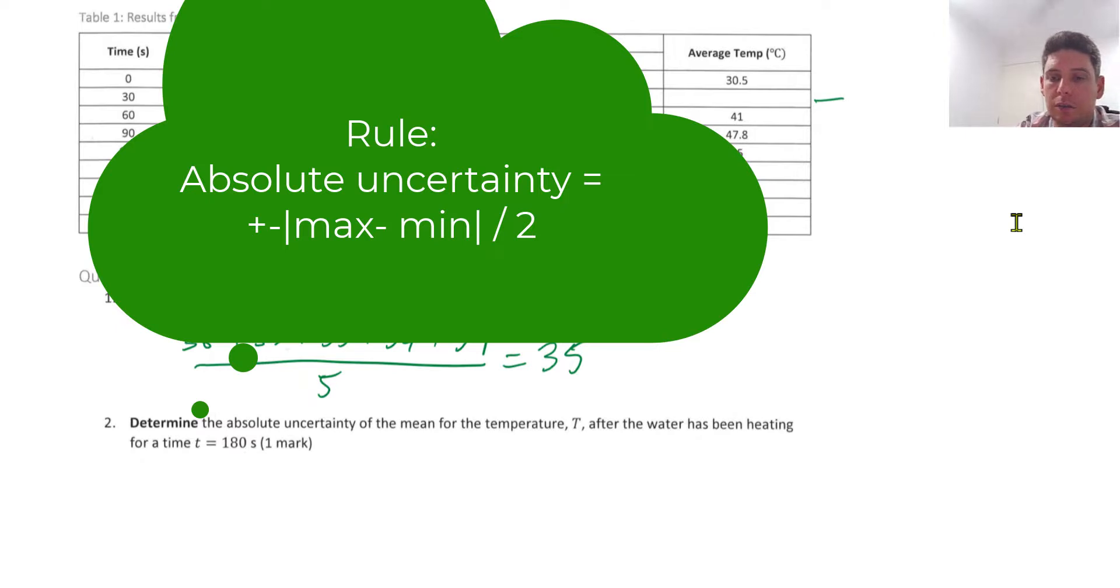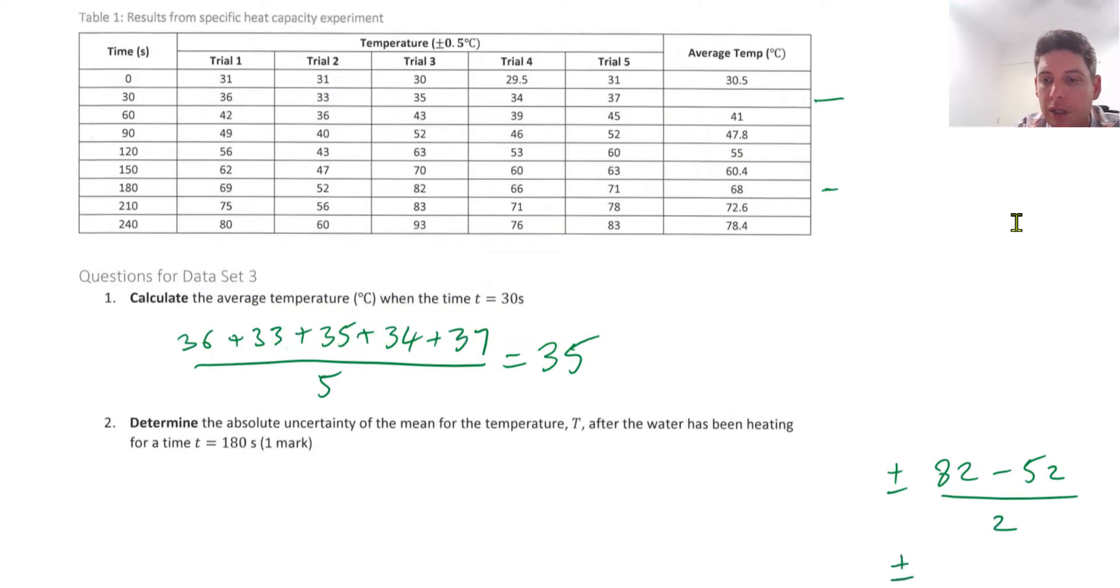is plus or minus the largest one for that trial 180, which is 82, minus the smallest one which was 52, and divide that difference by 2. So plus or minus 30 divided by 2 which is 15. So the absolute uncertainty is 68 plus or minus 15 degrees Celsius.